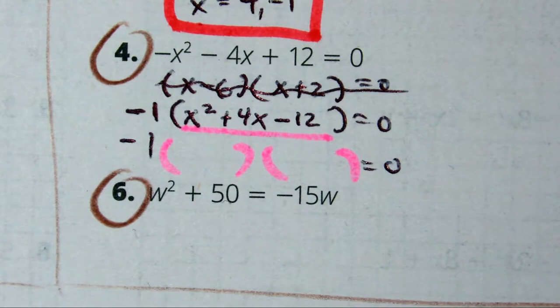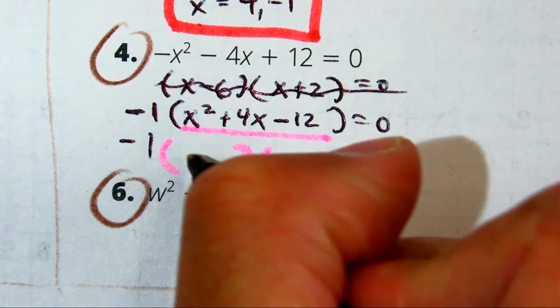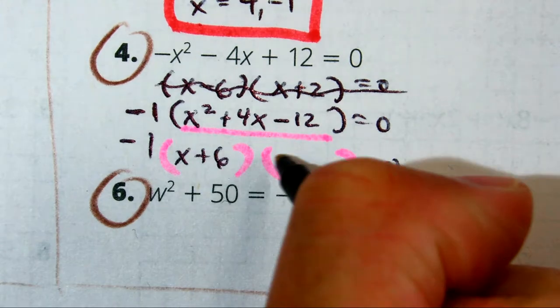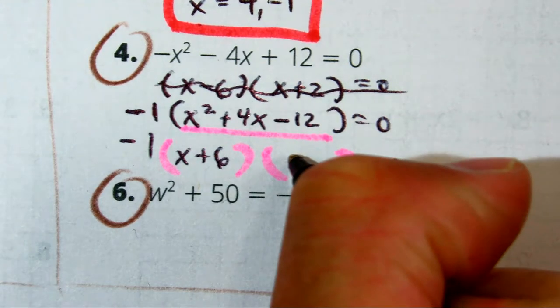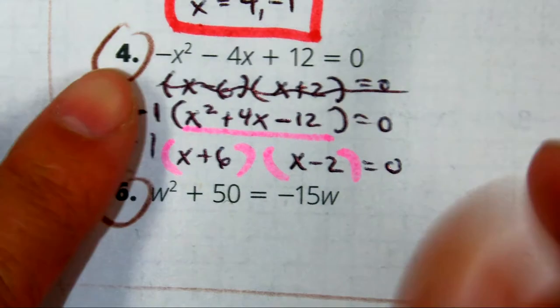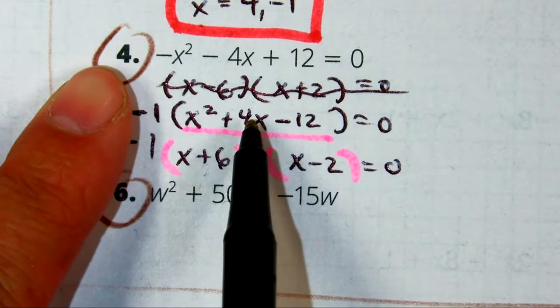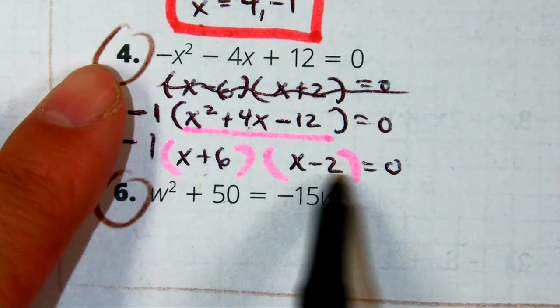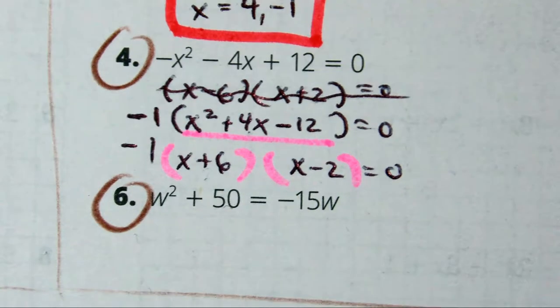Let's just be x minus 6. No, x plus 6. And then, x minus 2. Because, those two numbers will add to be 4, but multiply to negative 12. So, you've factored correctly. Okay, now we need to solve. What would you do to solve, Tony?